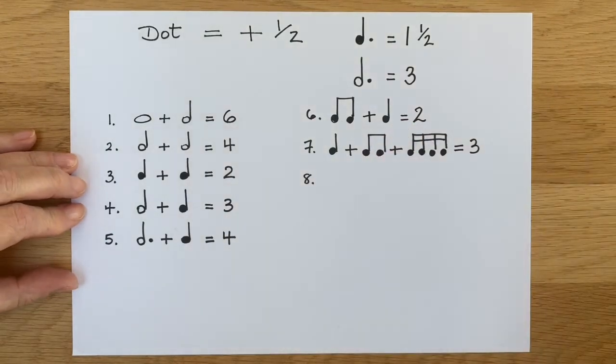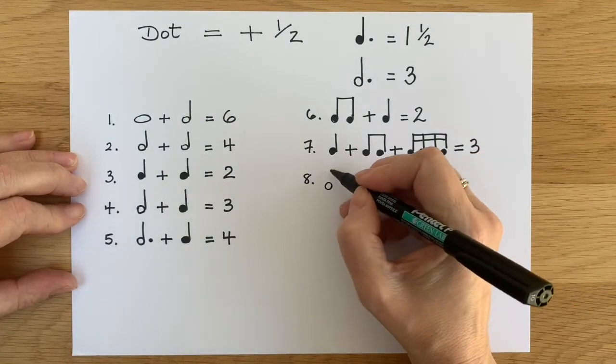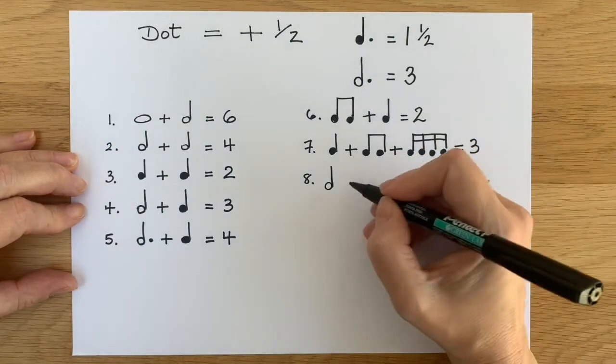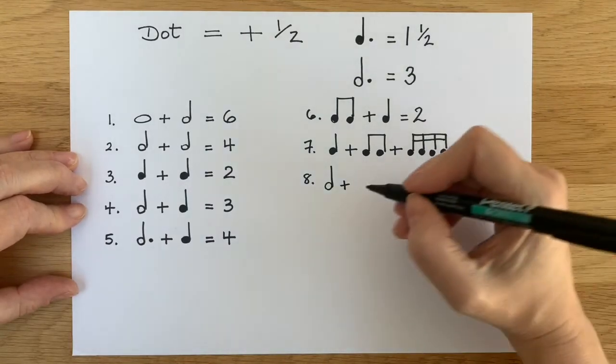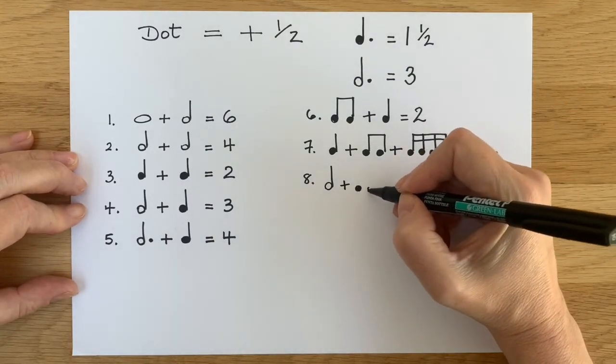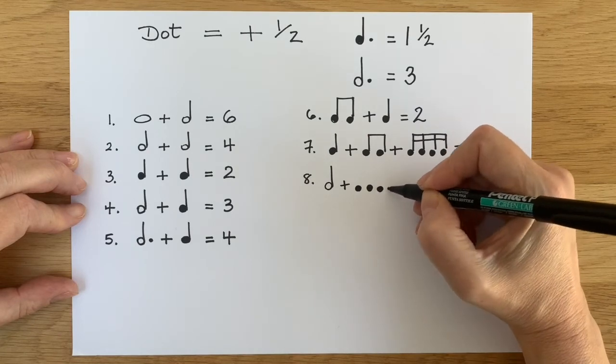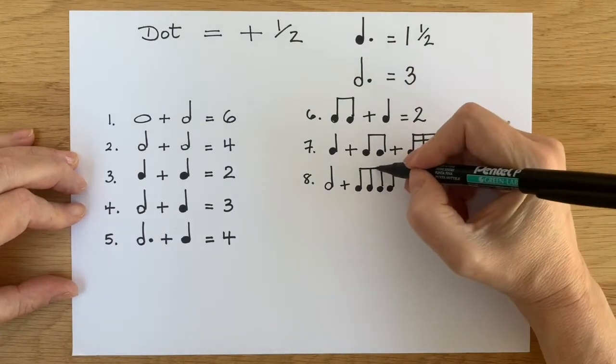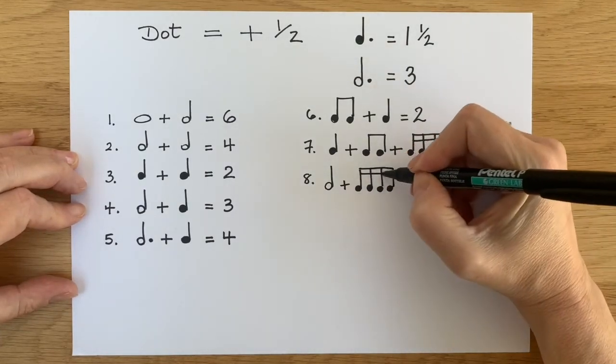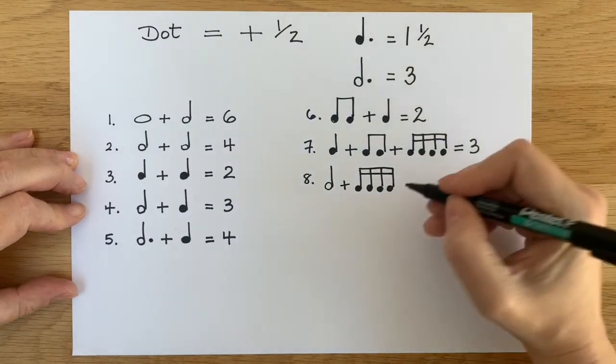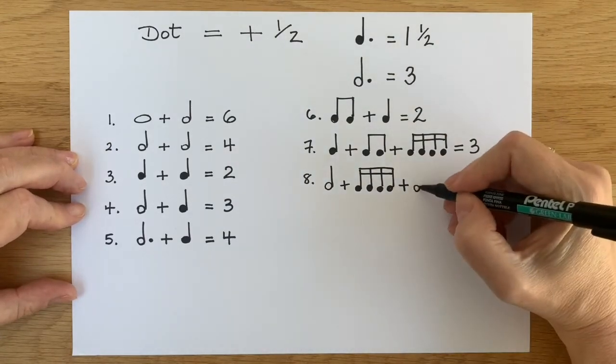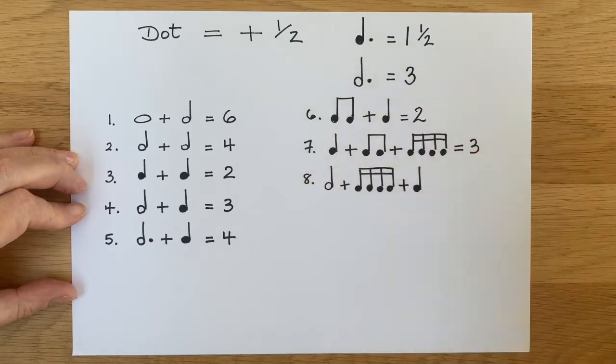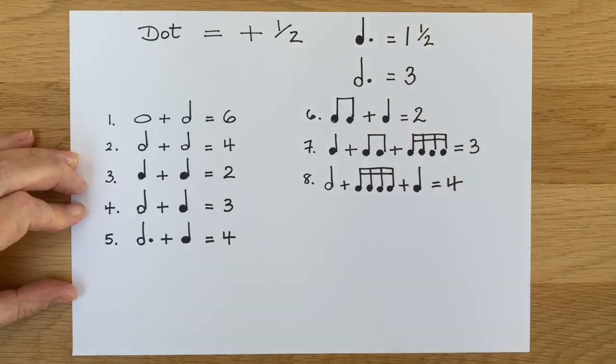Number eight. First note is a minim. And that's going to be followed by semi-quavers. Four semi-quavers. And then we're going to add a crotchet. Okay, look carefully and add them up. It's four.